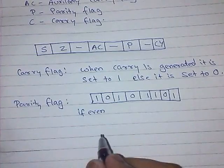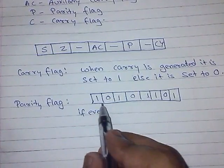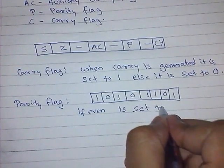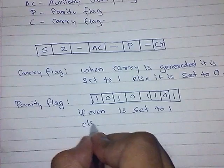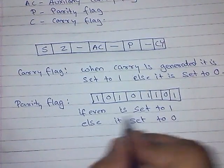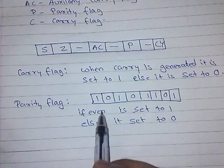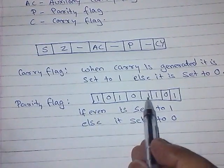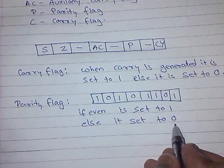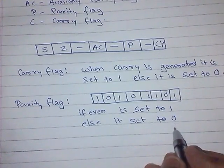In parity flag, when there is even number of 1s then parity flag is set to 1, or else it is set to 0. Else means when this is odd. Here we can see that it is 1, 2, 3, 4, 5. So 5 is odd number of 1s. Therefore, the parity flag will set to 0.